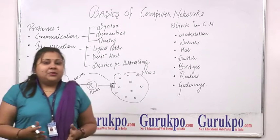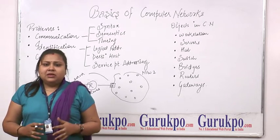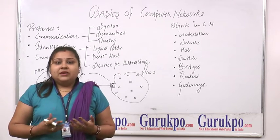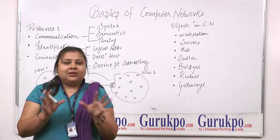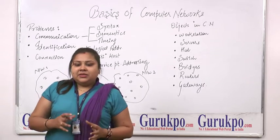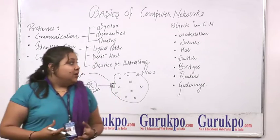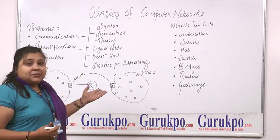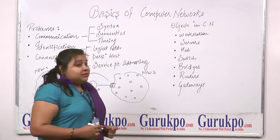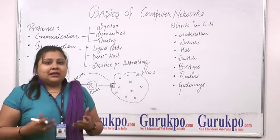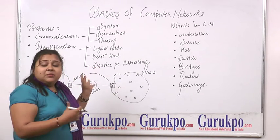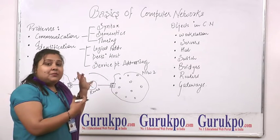First of all, what is a computer network? Multiple devices, when they are connected for the purpose of sharing information, such a network is known as computer networks. There are basic problems which are encountered during computer networks, and those are communication — that is how to get communication. Those three problems mean they deal with protocols.